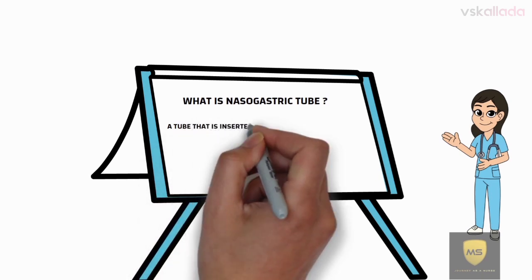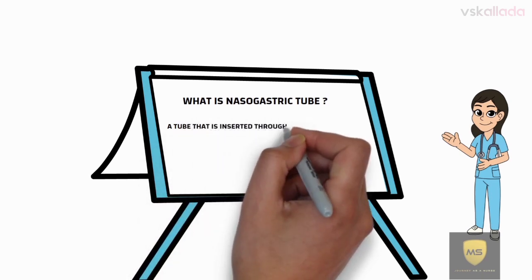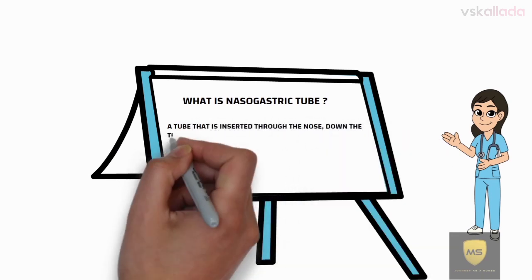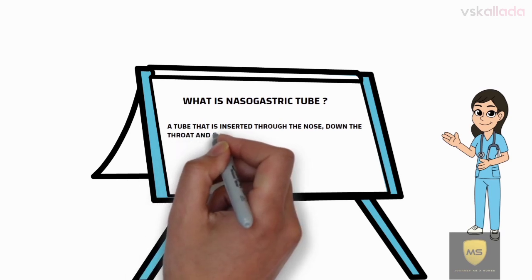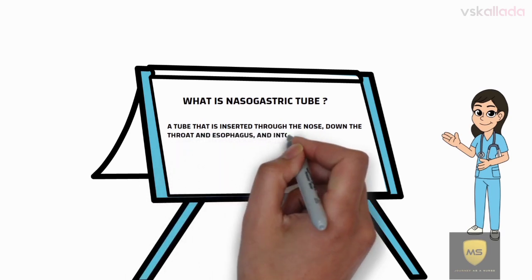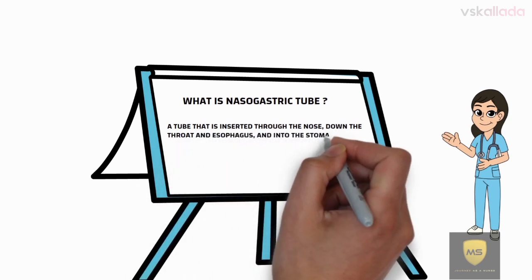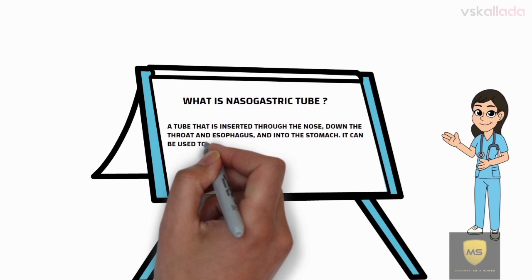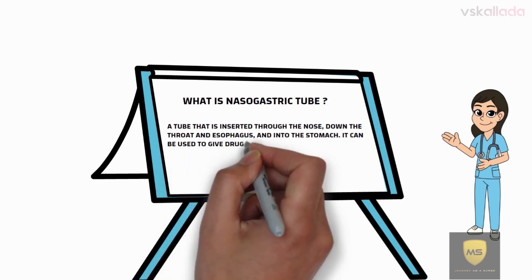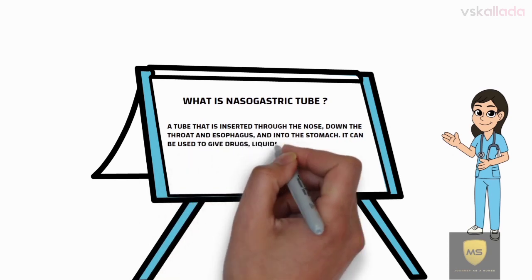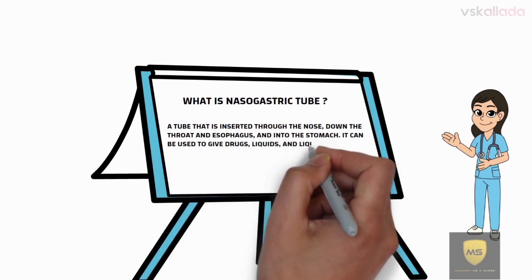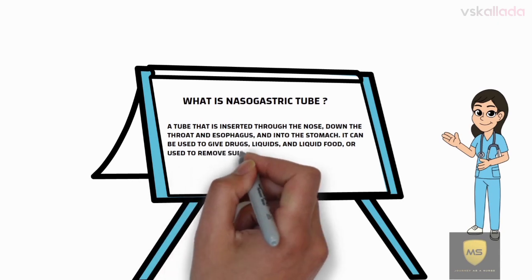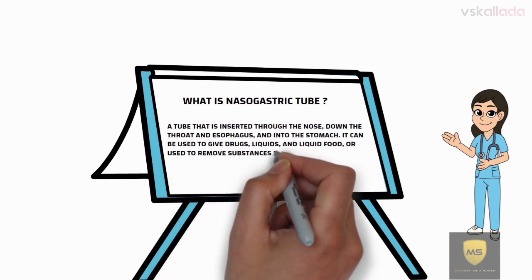What is a nasogastric tube? A nasogastric tube is a tube that is inserted through the nose, down the throat and esophagus, and into the stomach. It can be used to give drugs, liquids, liquid food, or used to remove substances from the stomach.